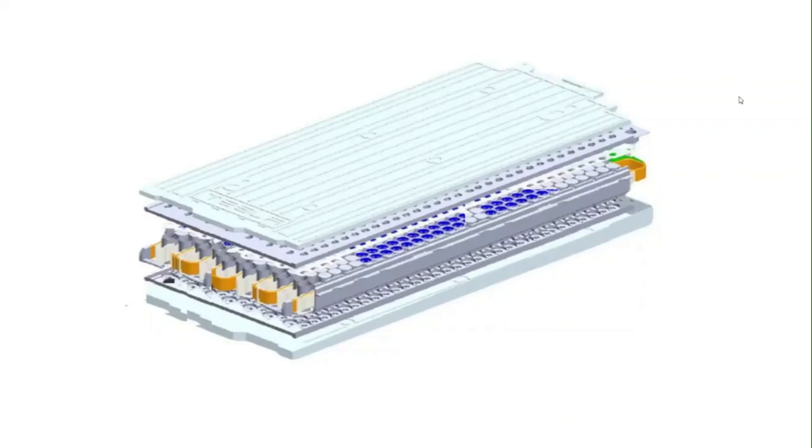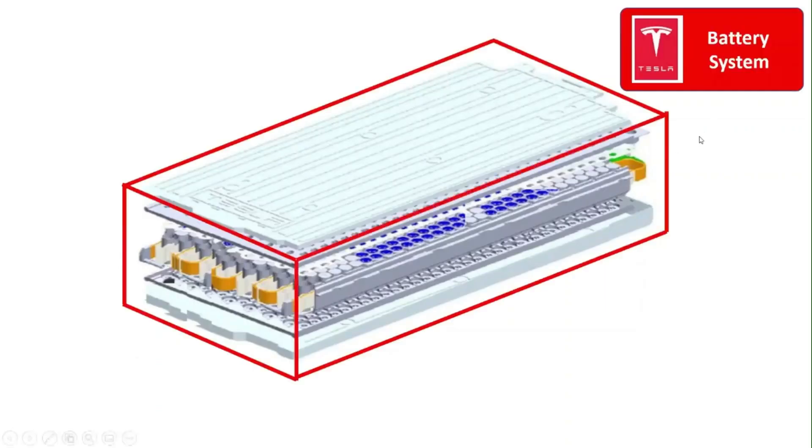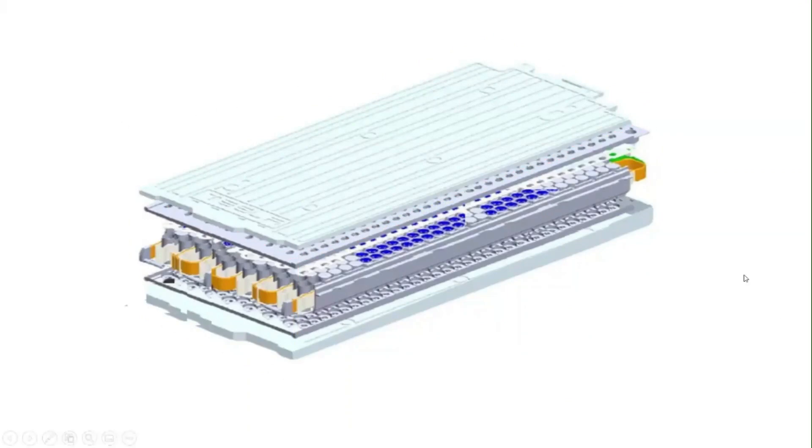The Tesla Model S battery system consists of the following. The cooling system in Tesla Model S is based on propylene glycol, which acts as a coolant.